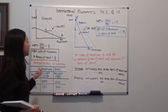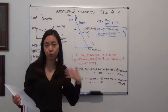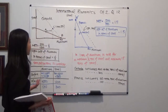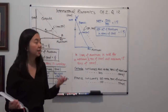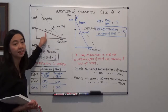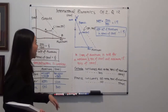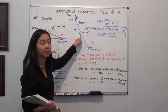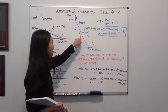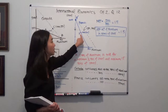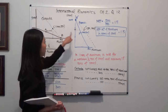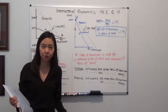You're also told that under autarky — meaning we're not trading with each other — you will have to consume whatever you produce. In that situation, Canada is going to produce and consume 600 tons of aluminum and 300 tons of steel, and we mark that as point A. For France, they will produce and consume 400 tons of aluminum and 600 tons of steel, marked as point A prime.